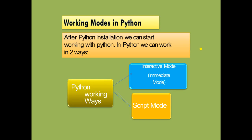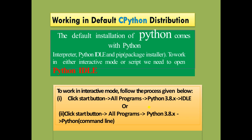There are two working modes in Python: interactive mode (also called immediate mode) and script mode. In the default CPython distribution, the installation comes with the Python interpreter and Python IDLE. To work in interactive mode, click Start, then All Programs, then Python, then IDLE. You can also use the command line.